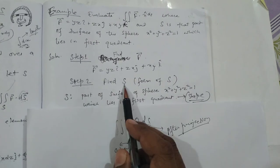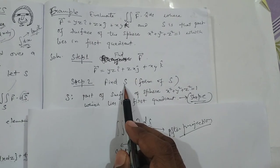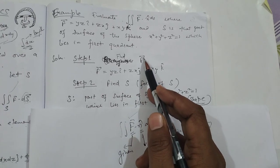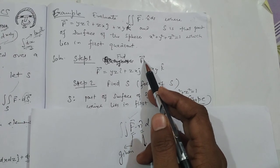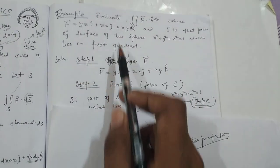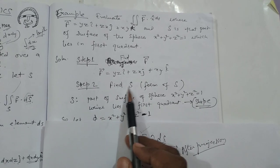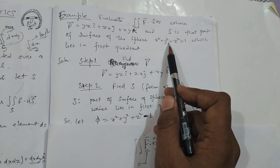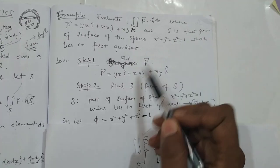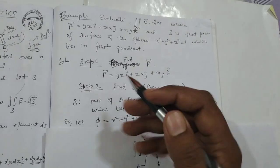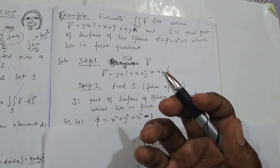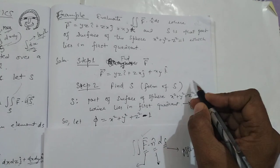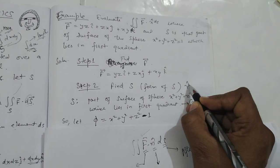Step 1: Find F — F is given, so that is done. Step 2: Identify the surface S. Our surface S is x² + y² + z² = 1, which is a sphere. From this surface S, we need to extract n̂ (the unit normal vector).